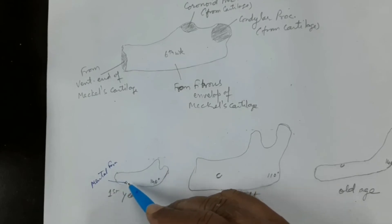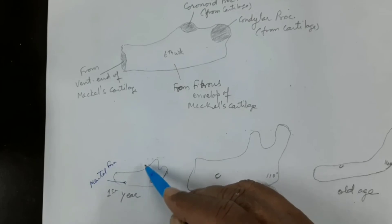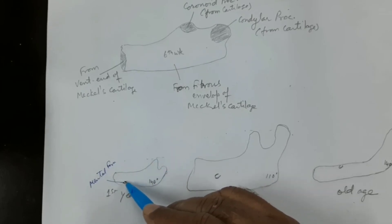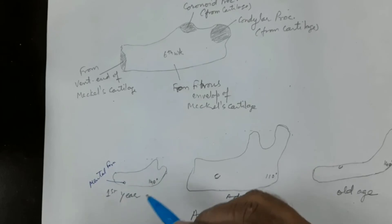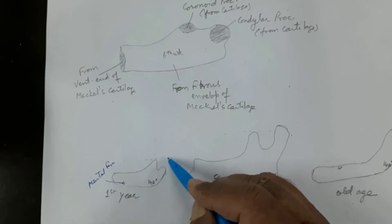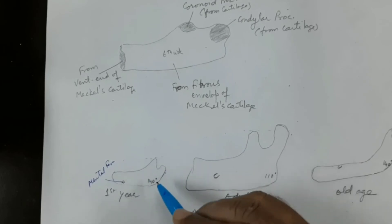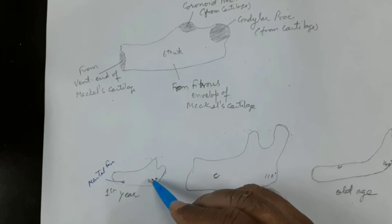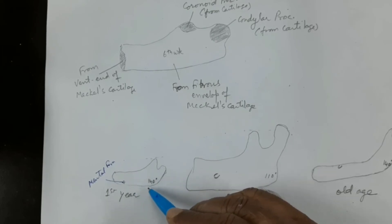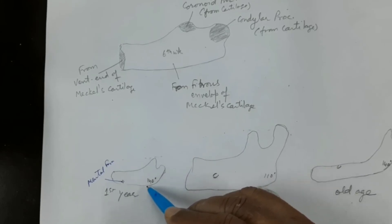The mental foramen is close to the lower border because near the upper border there are milk and permanent tooth buds present. As age advances and the milk teeth are erupted, the mental foramen starts shifting towards the middle of the body because of bone deposition near the lower border. Similarly, the condylar head rises to a higher level than the coronoid process as age advances, and the angle between the lower border and posterior border of the ramus is around 140 degrees in infants.